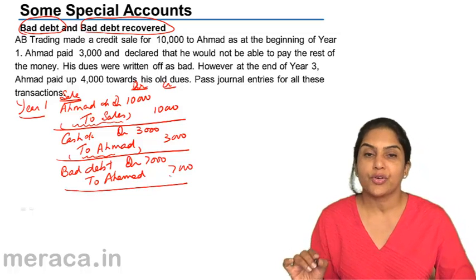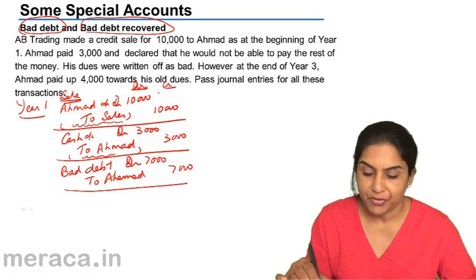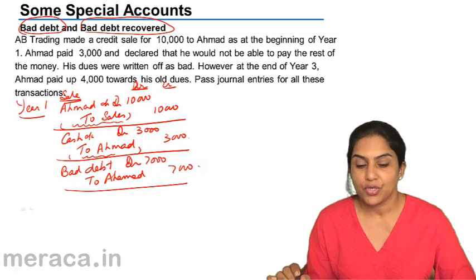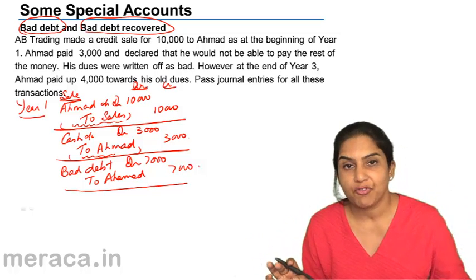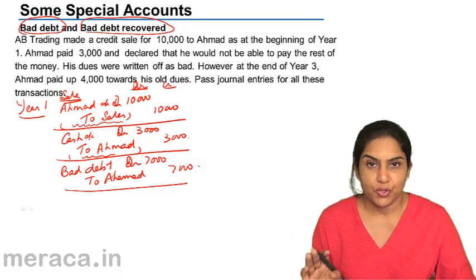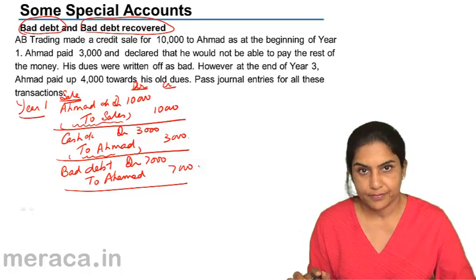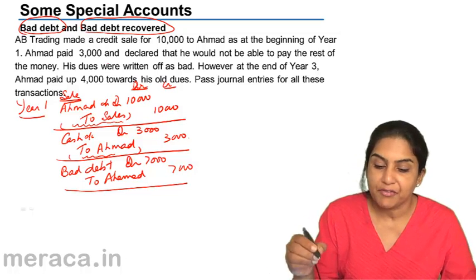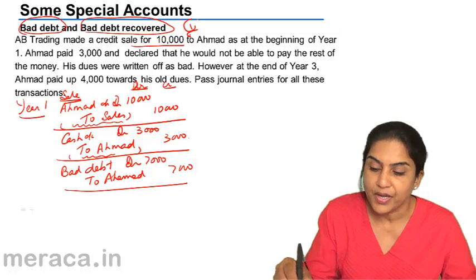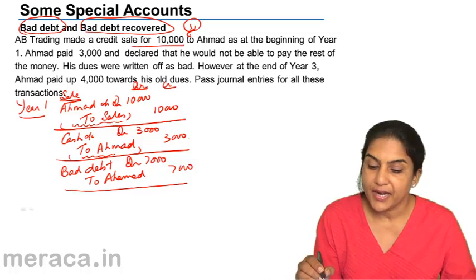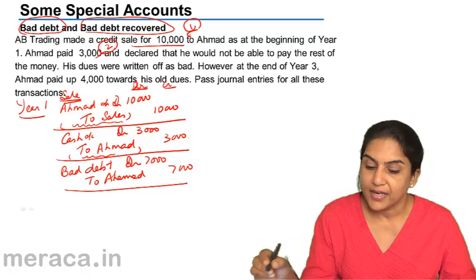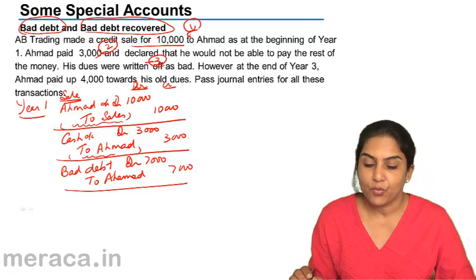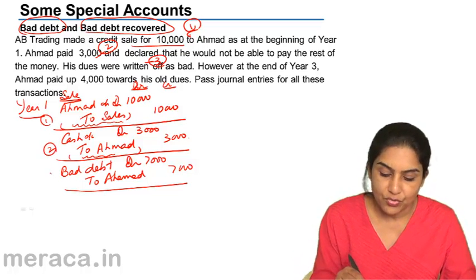So now there is no receivable. Ahmad had a receivable of 10,000, then we reduced 3,000, then again we reduced 7,000. So we don't have any money to be received from Ahmad as per our books at the end of year one. We passed three entries: first, the entry for the credit sale; second, the entry for receipt of 3,000; and third, bad debt write-off of 7,000.